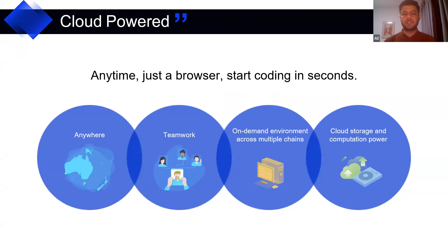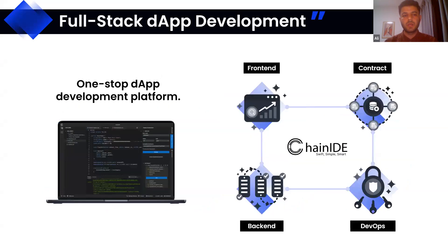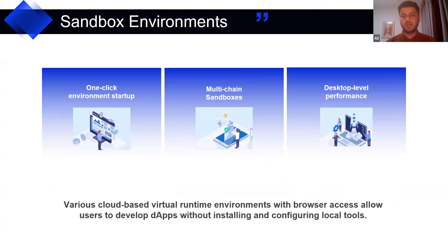The biggest advantage of Chain IDE is you can simply log in with GitHub and code from anywhere. You don't need your laptop — just log in and access all your projects anywhere. It supports cloud storage and you can save up to 10 projects on Chain IDE cloud storage. You can create full-stack DApps — front-end and back-end — entirely within Chain IDE. We provide multiple sandboxes including NPM Truffle and NPM Ganache, which you can use to create your full-stack environment and deploy smart contracts to different blockchains.